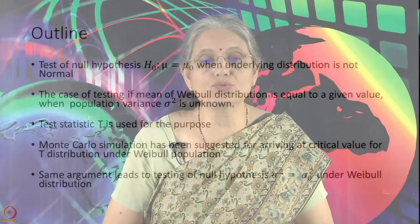In this session today, we would like to derive a test statistic to test the hypothesis — the same two hypotheses — that the population mean is equal to a given value versus its three alternatives, and population variance is equal to a given value versus its three alternatives. But the underlying population distribution will not be assumed to be normal. In this case, we have assumed it to be Weibull distribution.